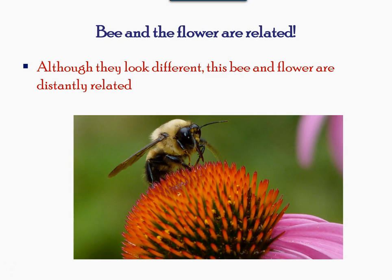This section will help to understand how different organisms evolved and what is the relationship among different organisms. As seen from this image of the flower and the bee, they look physically different, however they are distantly related.